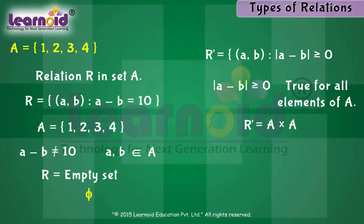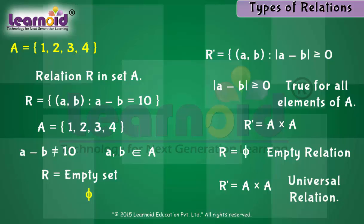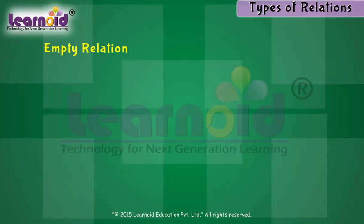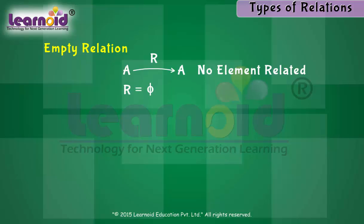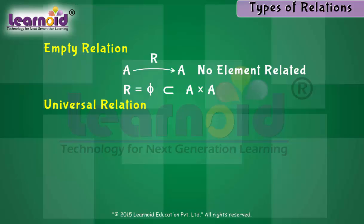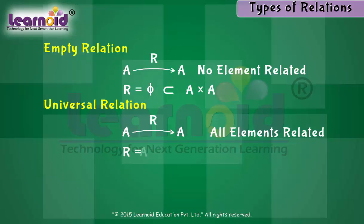It means a relation on A can have two extreme possibilities — it can have no elements, or it can contain all elements of A cross A. Based on this, we define these as empty relation and universal relation. A relation R in a set A is called an empty relation if no element of A is related to any element of A; that is, R equals phi, which is a subset of A cross A. A relation R in a set A is called a universal relation if each element of A is related to every element of A; that is, R equals the complete set A cross A.